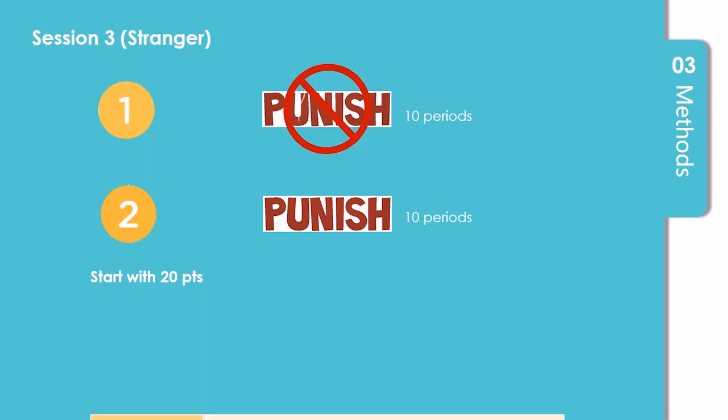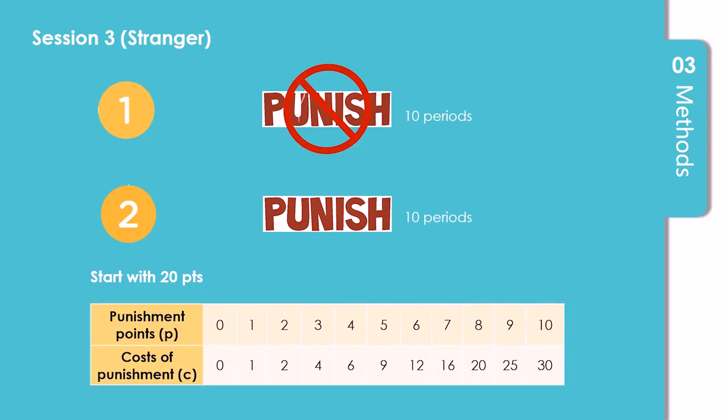The table here shows the feasible punishment levels and the associated cost for the punisher. Participants only know their own punishment activities and the aggregate punishments imposed on them by the other group members.